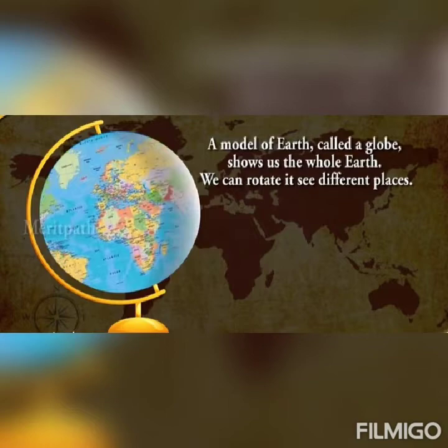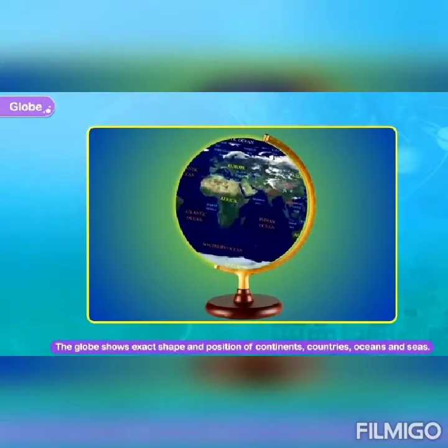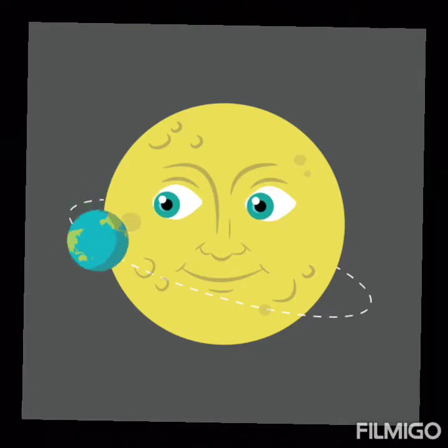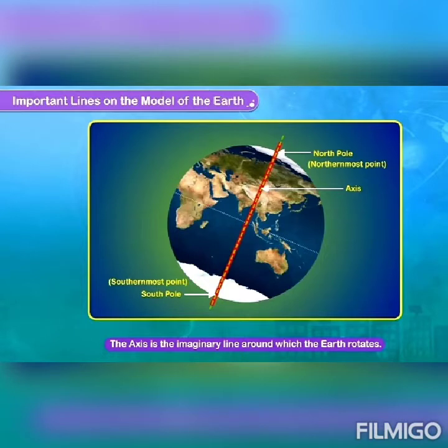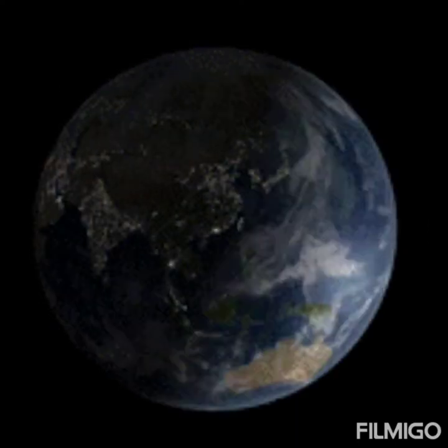The globe helps us to locate directions, distances, and the exact shapes of oceans and continents, though not as precisely as a map. We know that the earth rotates on its axis. The axis is an imaginary line passing through the middle of the earth, from the North Pole to the South Pole. The tilted axis of the earth is responsible for the phenomena of days and nights of different durations, and the occurrence of seasons on earth.